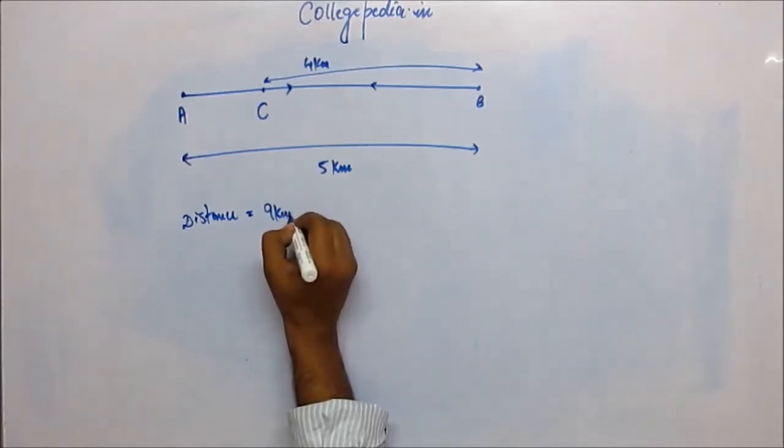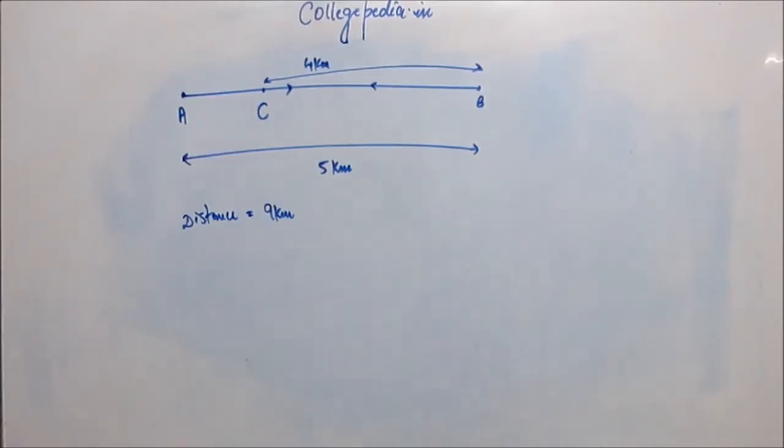That was actually 5 plus 4 kilometers. The distance traveled by this person is 9 kilometers. I'm beginning with this, and through this illustration we'll actually understand and appreciate why we're going to study what we're going to study. The distance traveled by this person from A to B and back to C is 9 kilometers.